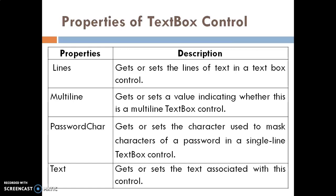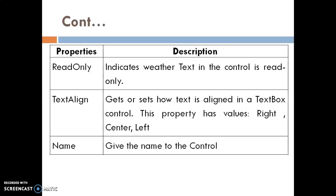The next property is Text — it is used to get or set the text associated with this control. The next property is ReadOnly — it indicates whether the text in a control is read only. The next property is TextAlign — it is used to get or set how text is aligned in a text box control. This property has values Right, Center, or Left.